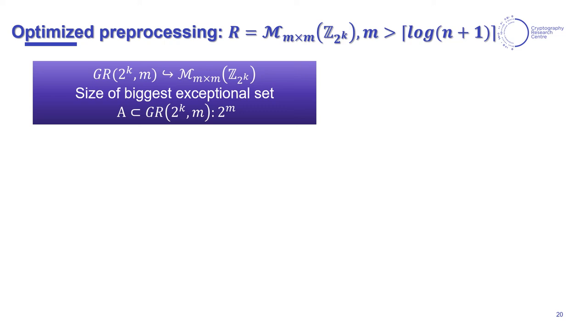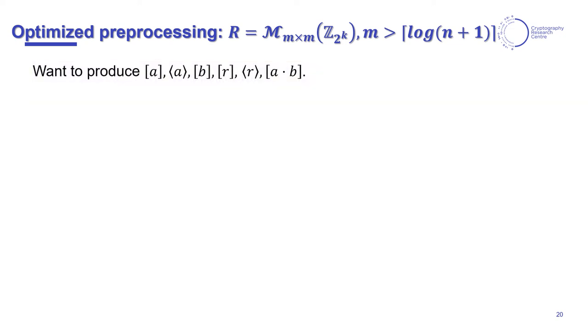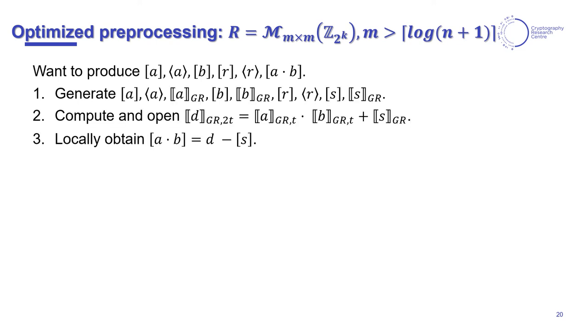Let's now turn to our more efficient non-black box preprocessing for the ring of m×m matrices over the integers modulo 2^k. Remember that here we have secret sharing schemes which are not multiplicative, and they are either left or right modules, as long as the matrix size is logarithmic in the number of parties. We need to produce sextuples as shown in the slide, which we will simplify in the three following steps.